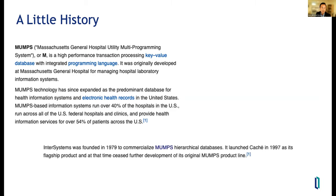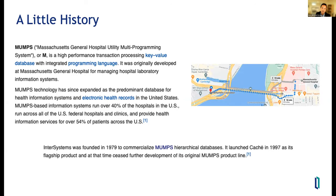InterSystems was created in 1979 to commercialize the MUMPS hierarchical database. It was launched as Caché in 1997, and of course all the systems have since migrated, and there are a few very famous ones. Another key thing I want to emphasize is that the InterSystems office is right across the river — about 0.8 miles, and I can usually cover that distance in 12 minutes.